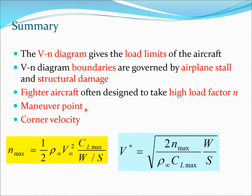We also saw the maneuver point, where the load factor is maximum and there is a corresponding velocity known as the corner velocity. The equation for corner velocity is highlighted in blue and the equation for maximum load factor is in yellow. These two equations are important because you may need to calculate the corner velocity of a given aircraft. If you are given N_max, CL_max, density, and wing loading, you can easily calculate the corner velocity.